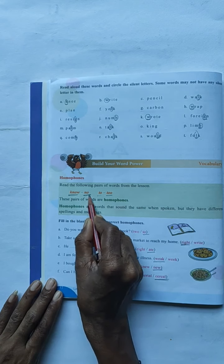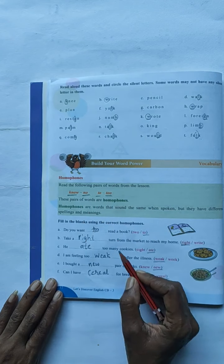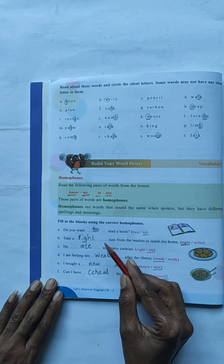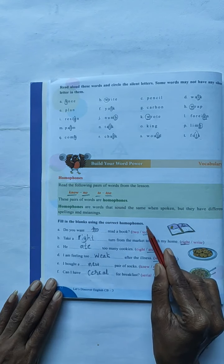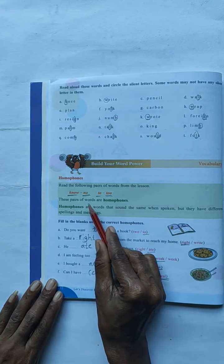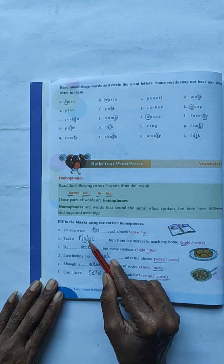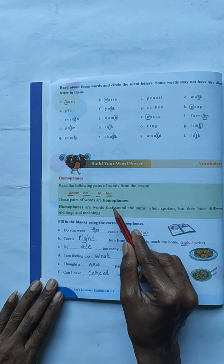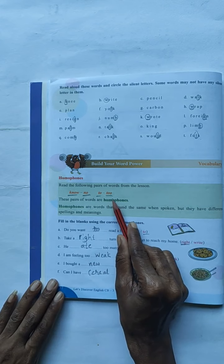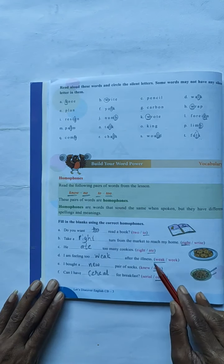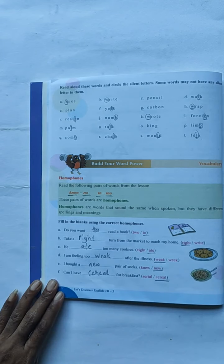See here children. They have given here two examples. K-N-O-W, N-O. These two words pronunciation same, but they have different spellings and meanings. T-O-2, T-O-O-2. Here will be the pronunciation same, but the spellings and meanings will be changed.